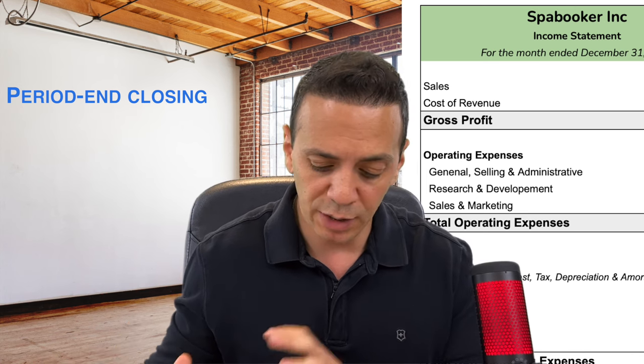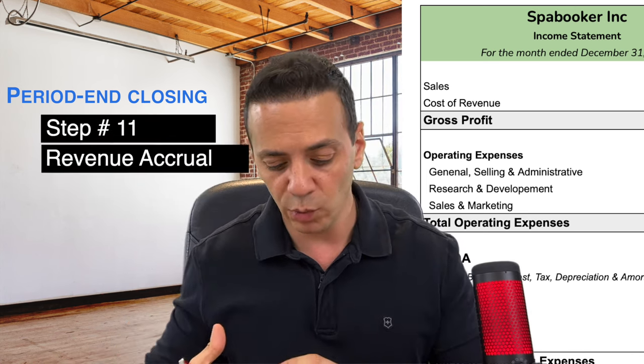With the balance sheet complete, we move to the income statement. Step eleven is revenue. Download a report of revenue for the month by customer and analyze for any accrual accounting adjustments. Under accrual accounting and ASC 606, you record revenue when you earn it — when you fulfill the performance obligation — not when you invoice or receive cash. Identify customers with specific contract clauses that require accrual adjustments to revenue.